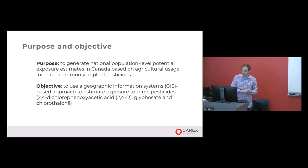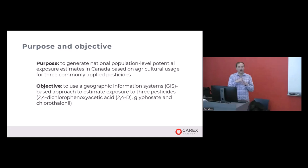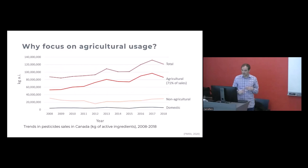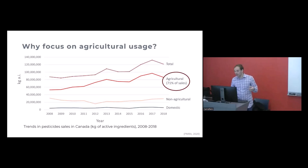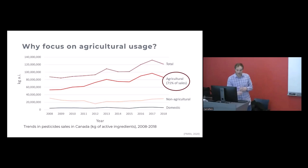The objective was to use a GIS-based approach to look at where pesticides are applied and where people are potentially exposed, giving us a spatial view across Canada. We focused on agricultural usage because 71% of all pesticide sales in Canada are in agricultural settings — almost three-quarters of pesticide usage is for agricultural purposes, making it the dominant source.